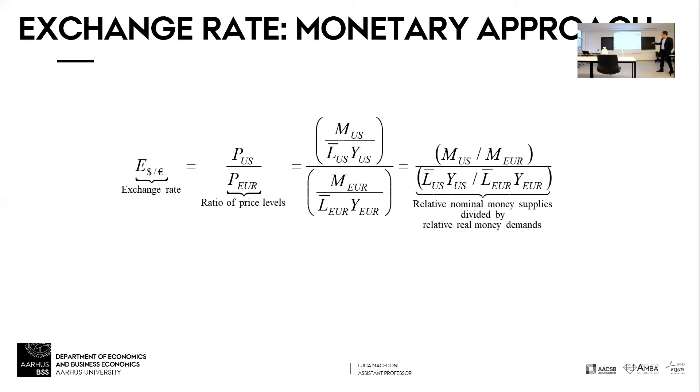If the price of the European basket of goods goes down, that means that people would like to buy more of the European basket of goods, so they demand more euros, so the euro appreciates or the dollar depreciates. It goes up.